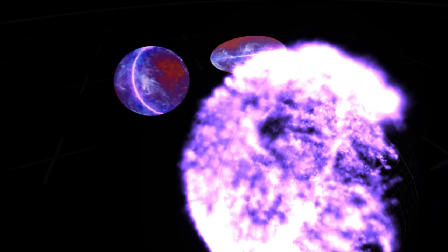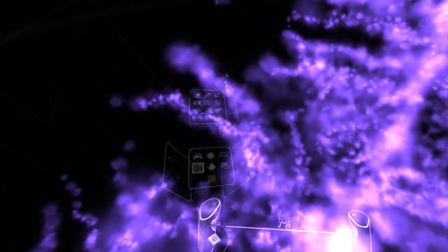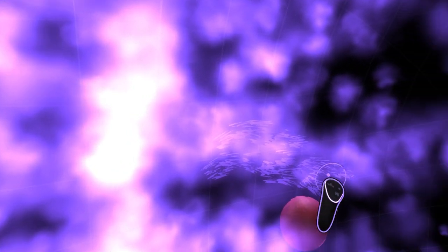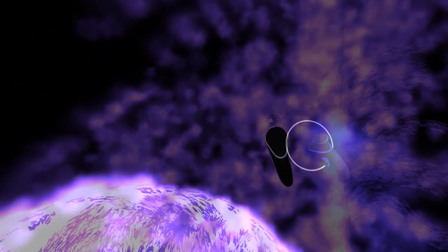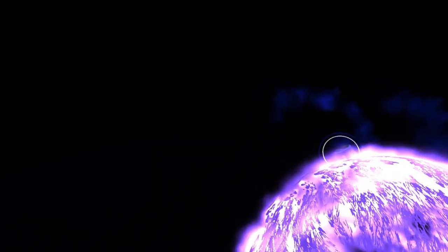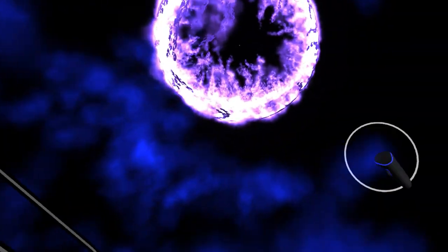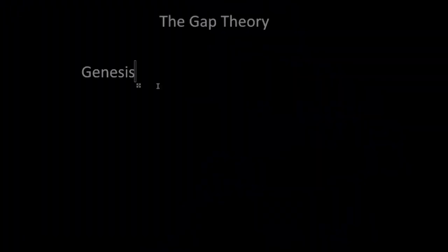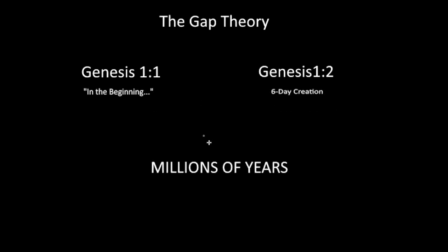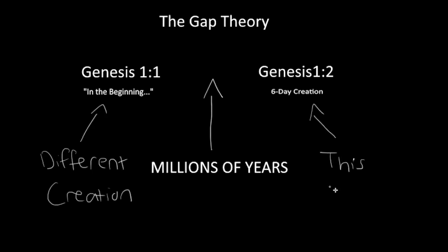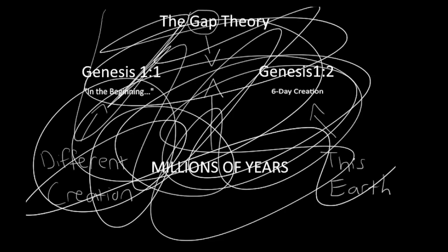Many Christians these days believe that both the earth and the universe are very old — billions of years — and that the six days mentioned in Genesis are not actual six 24-hour days. I, however, reject this belief. For example, people who believe in what is called the Gap Theory try to argue that there was another earth, and that millions of years are hidden in between verses 1 and 2 of Genesis 1. But this is incorrect, and here's my proof.